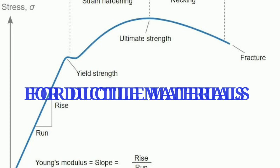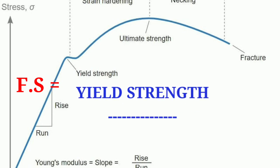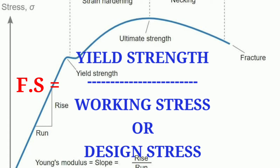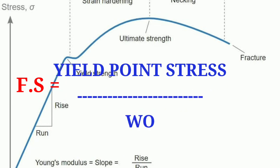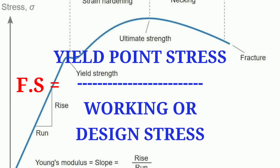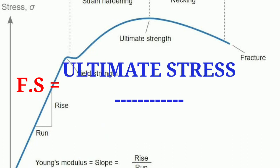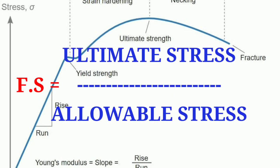For ductile materials, the factor of safety is yield strength to working stresses or design stresses. Again, the factor of safety is yield point stresses to working or design stresses, and also ultimate stresses to allowable stresses.